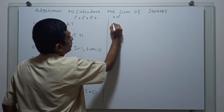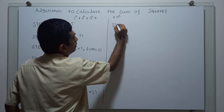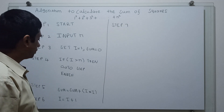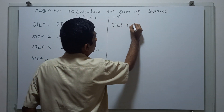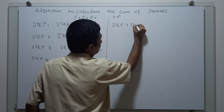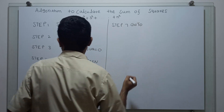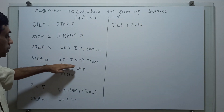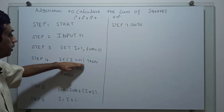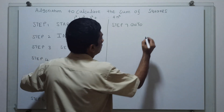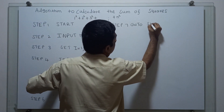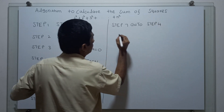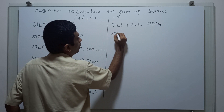Step 7: you have to transfer the control back to the step where it checks whether the value i is greater than n or not. Go to step 4.